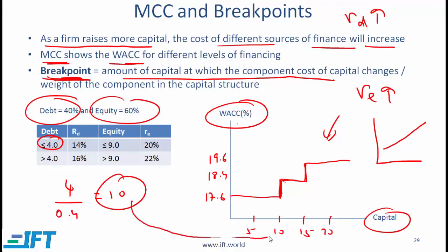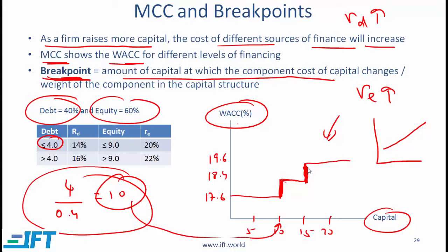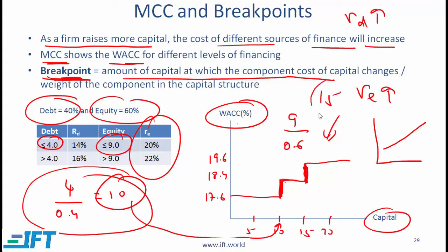So in the earlier example I simply gave you the numbers, but if on an exam you are asked to calculate the break points, here is what you need to do. For the second break point, this increase comes from equity — the amount at which the equity cost changes is $9 million. You divide 9 million by the weight of equity in the capital structure, which is 0.6. Nine divided by 0.6 equals 15 — and that is where the second break point occurs. Make sure you understand this concept.